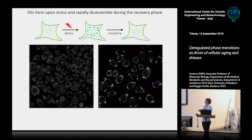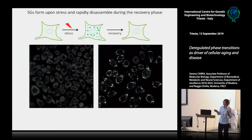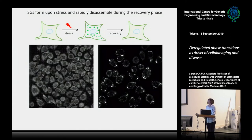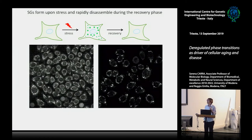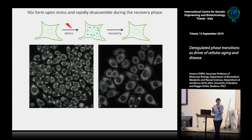To visualize stress granules in cells, we have HeLa cells stably expressing G3BP with a GFP tag — one of the key proteins required for stress granule formation. When we apply stress, stress granules form very rapidly, and when we remove the stress, in this case sodium arsenite, after a recovery phase, the stress granules very rapidly disappear. They form within minutes and dissolve within 10 to 30 minutes when we remove the stress. This is the typical behavior of stress granules in normal healthy cells.